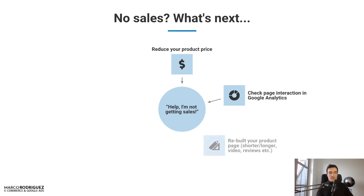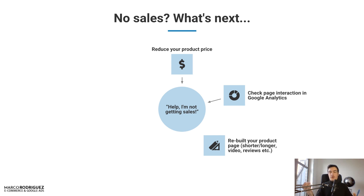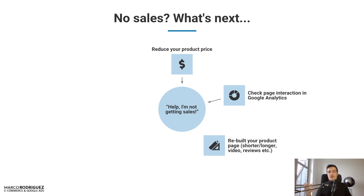Rebuild your product page — make it shorter or longer depending on your situation. If you have a super long page with crazy long descriptions that aren't even needed, try a much shorter, smoother version. Try adding a video if you don't have one, or remove it if you only use a video and have many clicks with no sales. Add reviews — but instead of importing 500 AliExpress reviews that sound non-legit, craft a few high-quality reviews. Most e-commerce businesses do this in the beginning to kickstart things.